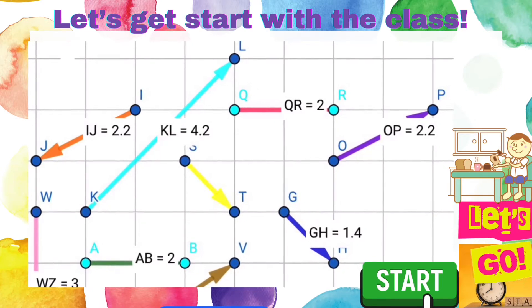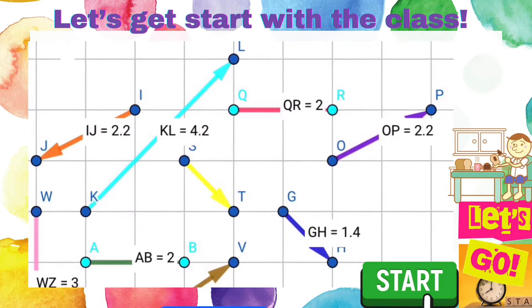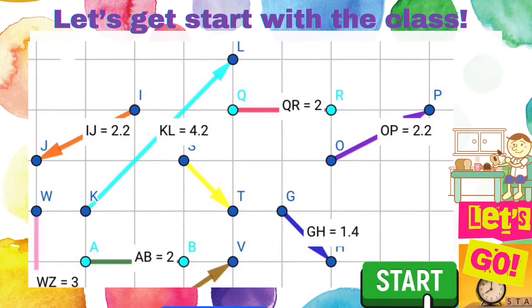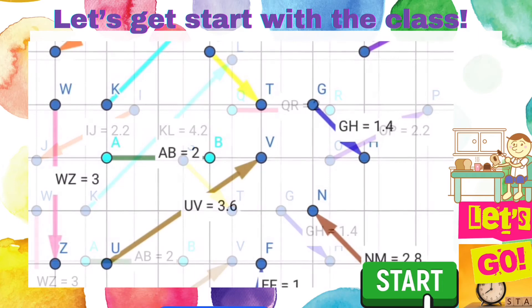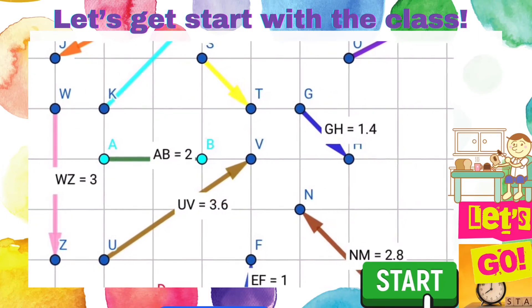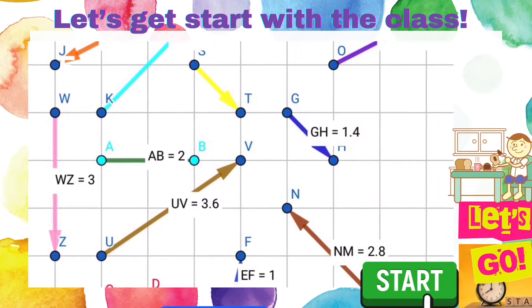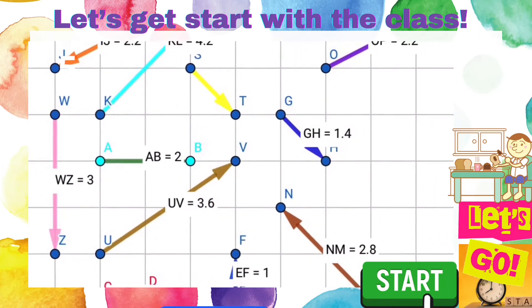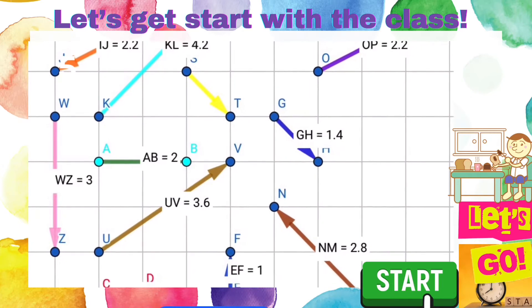So for a vector, it comes with a line segment and direction. So when we talk about the magnitude of a vector, we will measure the length or the distance.